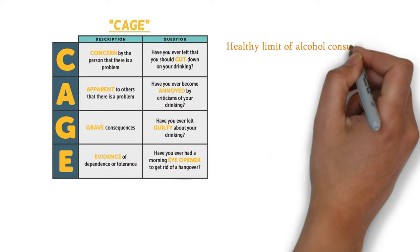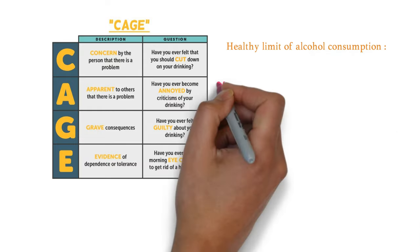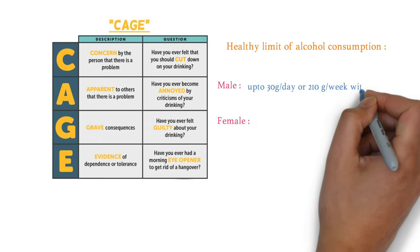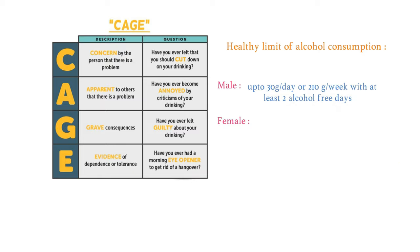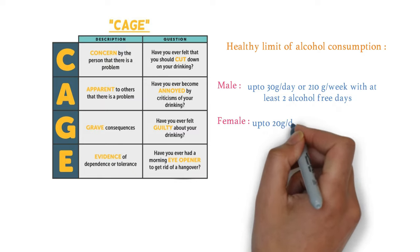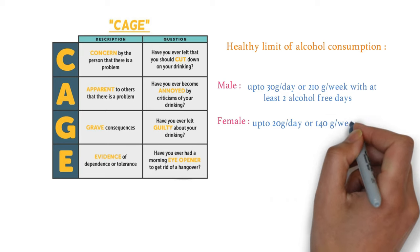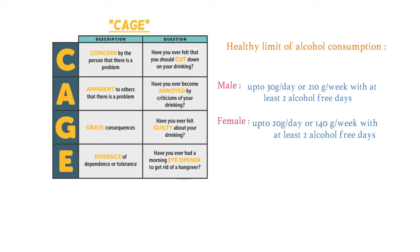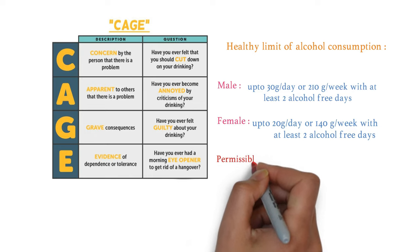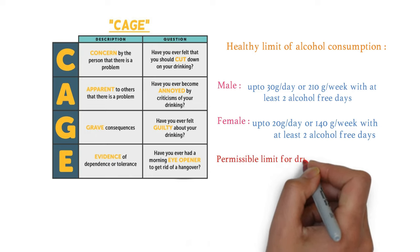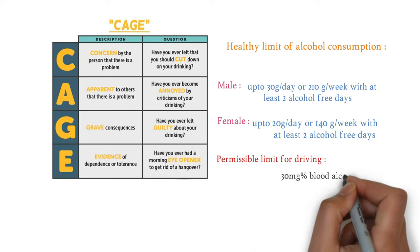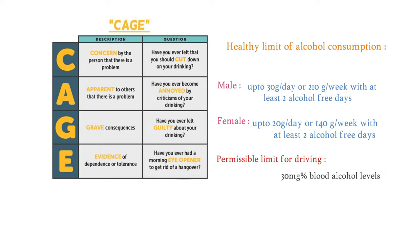What is the healthy limit of alcohol consumption? For males: up to 30 grams per day or 210 grams per week, with at least two alcohol-free days per week. For females: up to 20 grams per day or 140 grams per week, with at least two alcohol-free days. The permissible blood alcohol level for driving is 30 mg per dL.